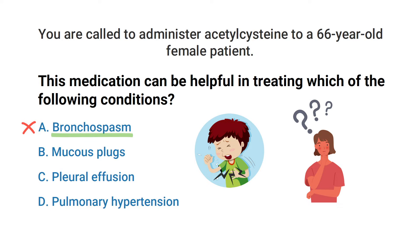That's why you always want to administer a bronchodilator when Mucomist is given. It would also not be helpful in treating a pleural effusion or pulmonary hypertension. So now we know that the correct answer has to be B — mucus plugs.